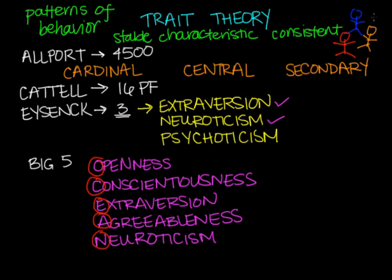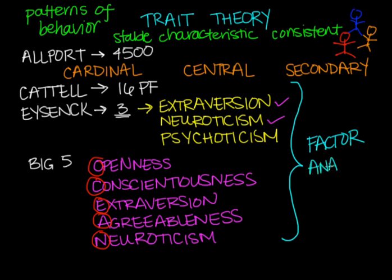So Cattell, Eysenck, and the big five all over here used something called factor analysis to come up with these categories of our traits. So factor analysis is a statistical method that categorizes and determines our major categories of traits. And Allport's theory did not use that. He relied on different procedures to determine traits.